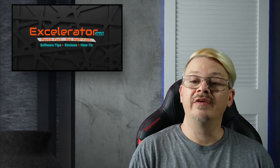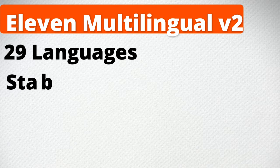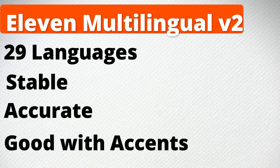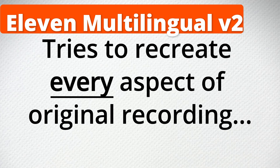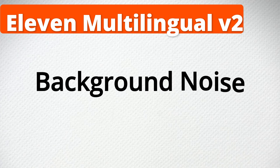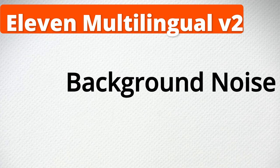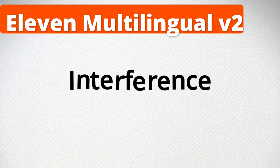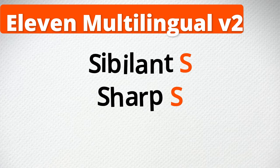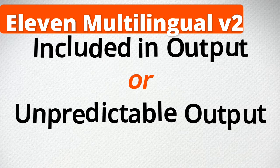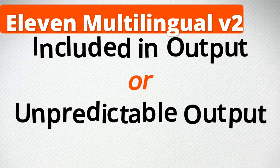Now, which model do we use? We have ElevenLabs Multilingual V2. It has 29 languages. It's very stable and accurate. It's great with accents and has lots of language diversity. Keep in mind that it tries to recreate every aspect of the voice that it's trained on. So if you're cloning a voice, background noises, electronic interference, and even sharp S's — the sibilance S's — in the sample can end up being included in the output, or just totally confuse the AI.